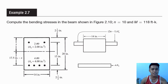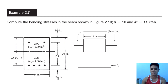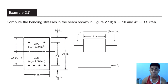Our example here is: compute the bending stresses in the beam shown. That is given, and considering that n is equals to 10 and M is equals to 218 feet-kips.